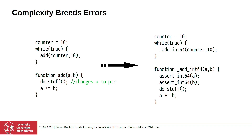However, what happens if do_stuff actually does have a side effect? In this case it would change a to a pointer — so a isn't an integer anymore after executing do_stuff. And let's assume that due to the complexity of recognizing side effects, the just-in-time compiler misses this. What will happen is that this effect is carried over. So do_stuff is now executed and will change a to a pointer; a is not an integer anymore. And of course, if we start adding stuff to pointers and changing the pointer, this might not end well and might actually have security implications. This is how just-in-time compilation can go wrong.